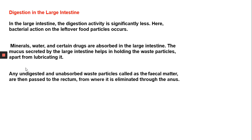The undigested and unabsorbed waste particles, called fecal matter, are passed to the rectum. The rectum is the area where temporary storage of undigested food — now called fecal matter — happens, from where it is eliminated through the anus. In this manner, the digestion process is completed.